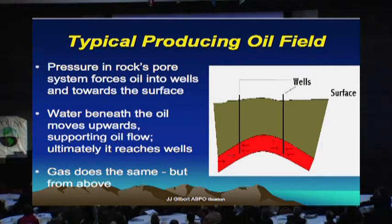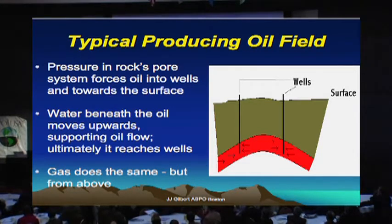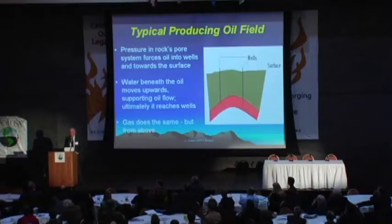In a typical oil field, we have oil sitting in porous rocks, with water generally underneath it and maybe gas above it. As we drill wells into the porous rock and allow the oil to come to surface, the water underneath and the gas above help move that oil up the wells to the surface. It's perfectly normal — in fact abnormal not — to have oil and water coexisting in an oil field.